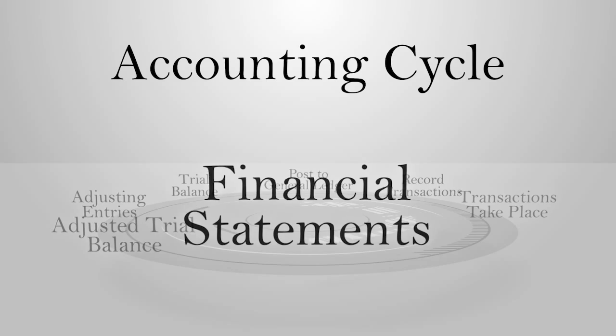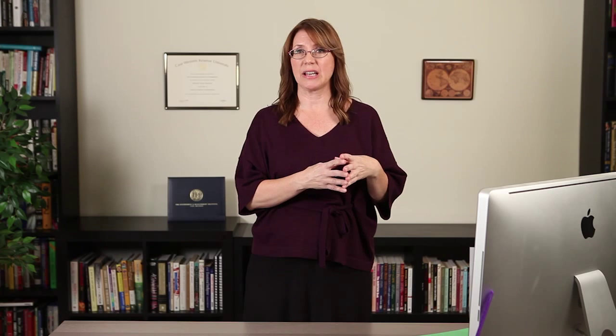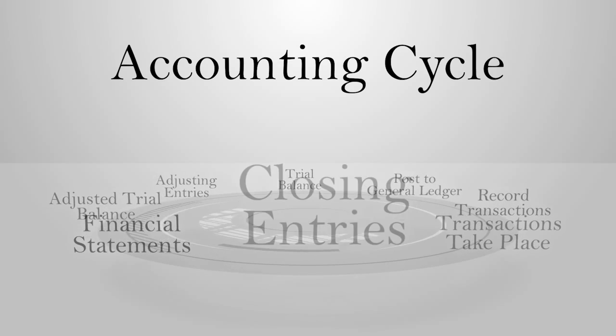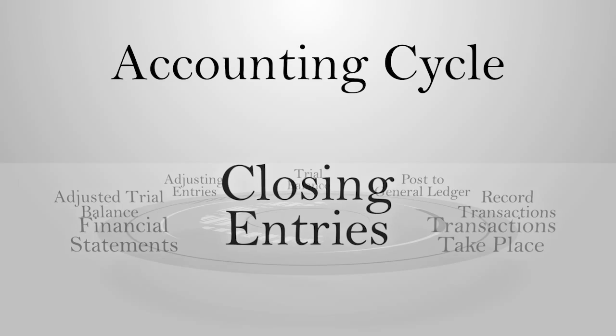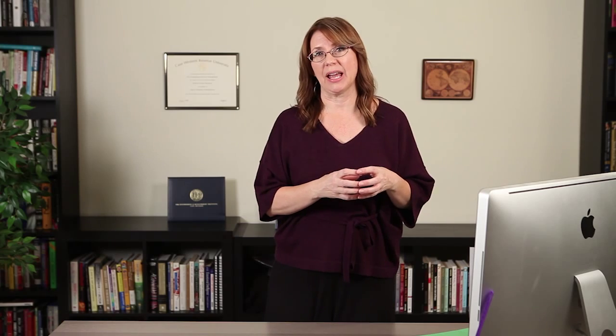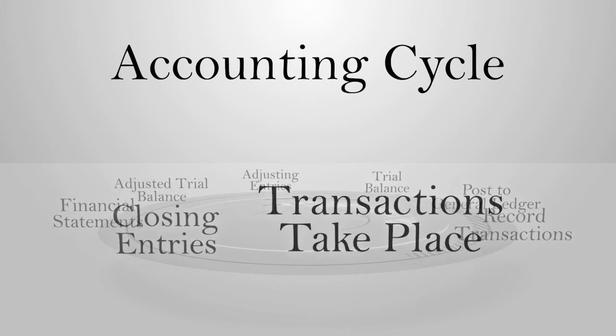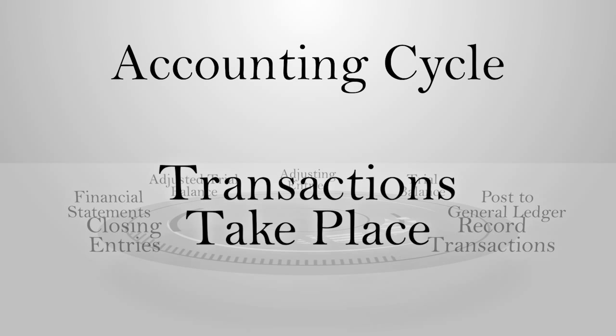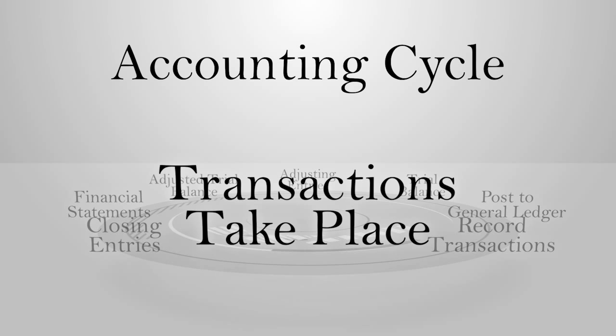You reprint the trial balance — the adjusted trial balance — and make sure your debits still equal credits. Then you go ahead and print the financial statements: the profit and loss and the balance sheet. Then closing entries will be entered; QuickBooks does this automatically. And you go back to step one: transactions taking place.